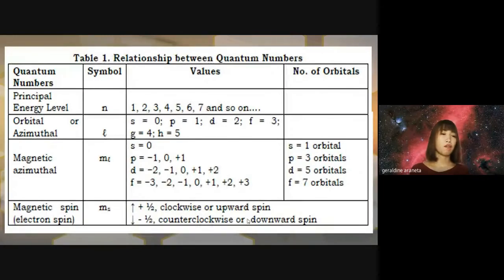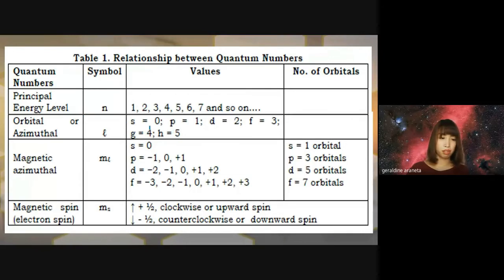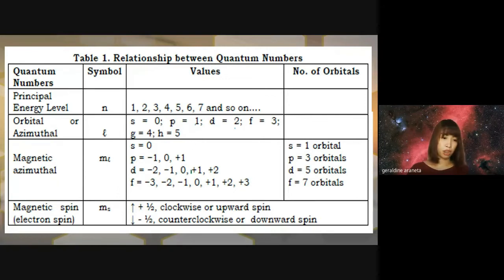Here is a summary table of the values for each quantum number. For the orbital quantum number L: S is 0, P is 1, D is 2, F is 3, G is 4, H is 5.